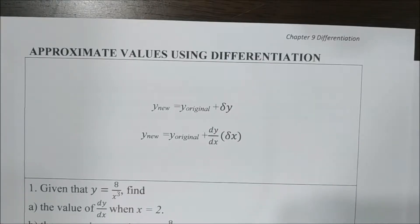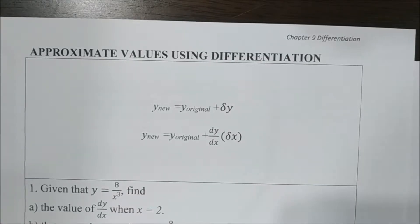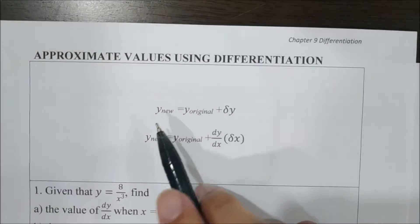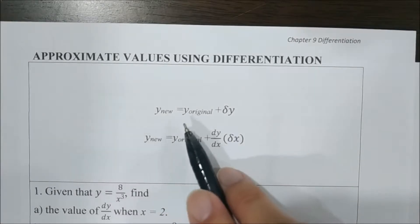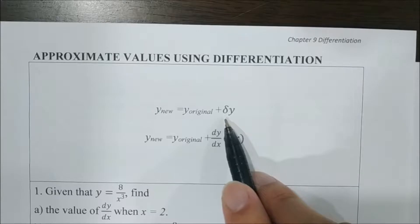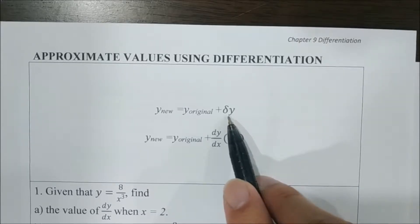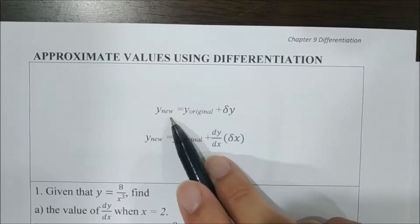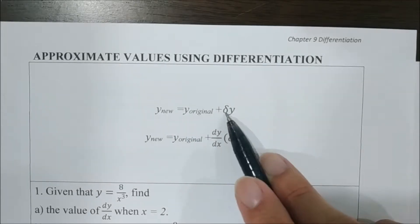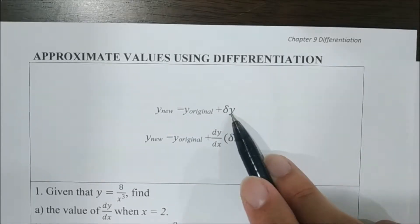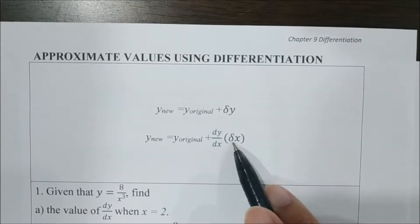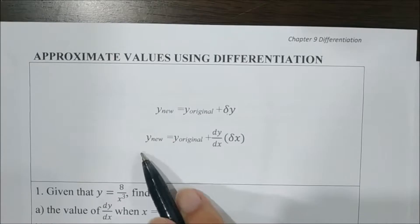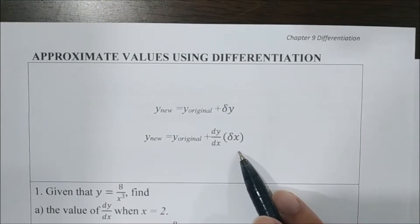We now continue with the last topic from chapter 9: differentiation, specifically approximate values using differentiation. If we want to approximate the new value of y, we take the original value of y and add the changes to y to get the new value. The changes in y, sigma y, is approximately equal to dy/dx multiplied by sigma x. This is the formula we are going to use in this part.